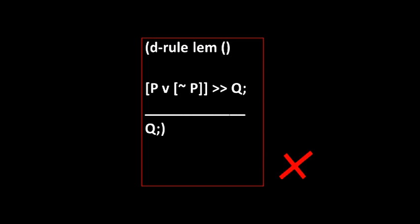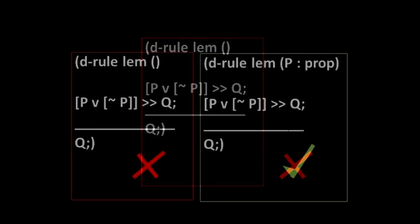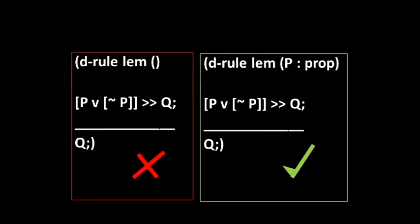So in conducting proofs using LEM we must expect to provide a value for p, to say what it is. Therefore, p is provided as a parameter. Moreover, the type of p has to be specified, and here it is obviously prop, and so here is the correct rendition.